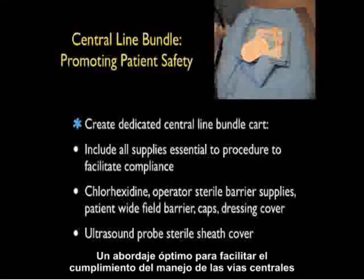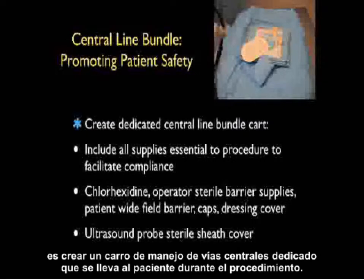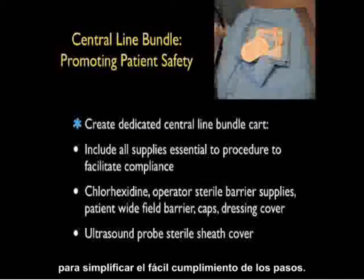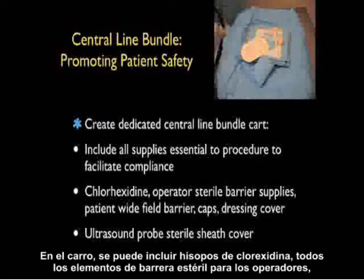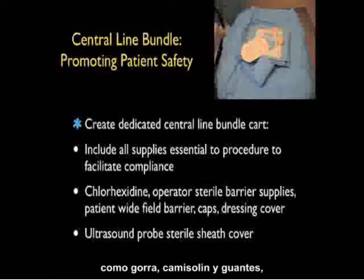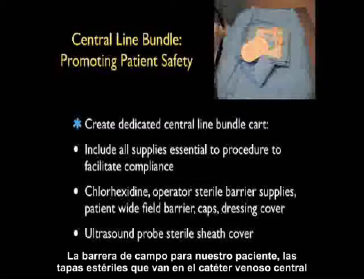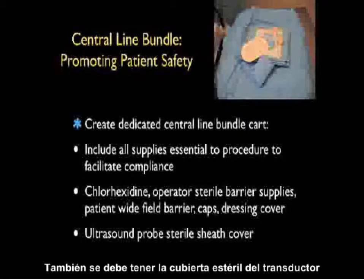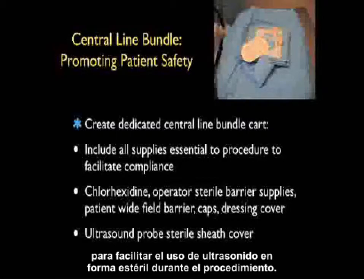An optimal approach to facilitate compliance with the central line bundle is to create a dedicated central line bundle cart that moves to the patient during the procedure. On this cart can be included all the supplies essential to central venous access: the chlorhexidine swabs, sterile barrier supplies for the operator such as the cap, gown, and sterile gloves, the wide field barrier for the patient, sterile caps for the central venous catheter, the Tegaderm dressing to cover the site, and the ultrasound probe sterile sheath cover to facilitate sterile use of ultrasound during the procedure.